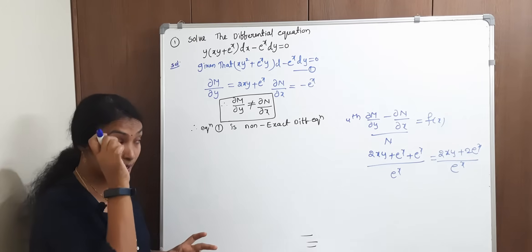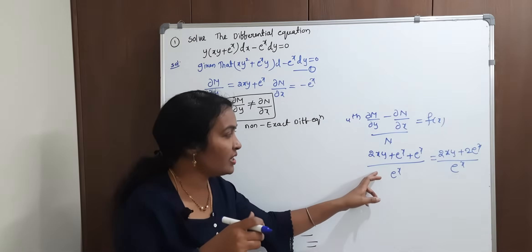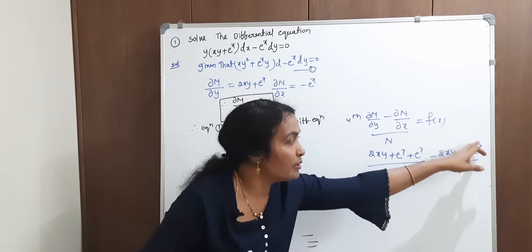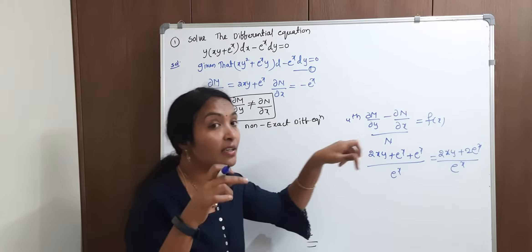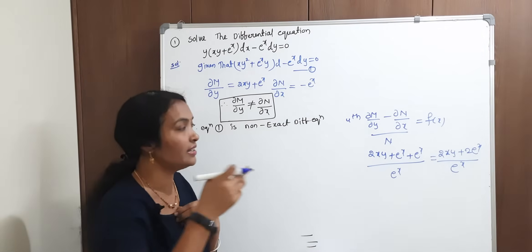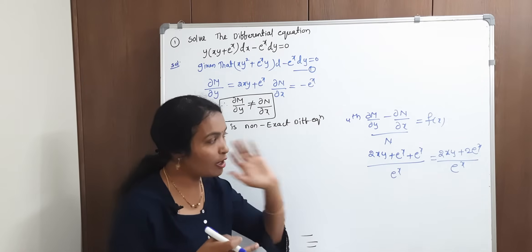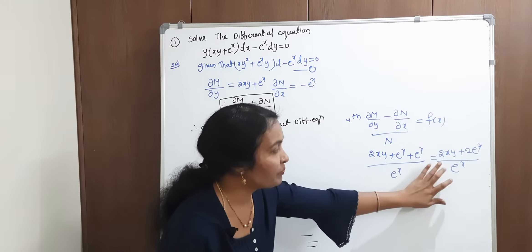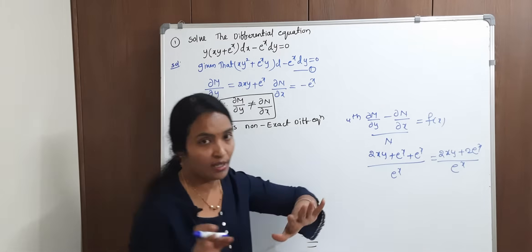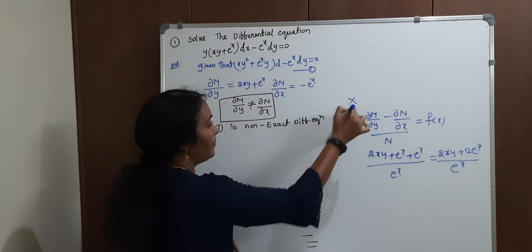Checking the 5th condition: after simplification, this term must be a single variable function. It is not a single variable — it is not common. Therefore, Method 4 is not applicable.